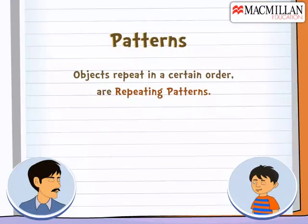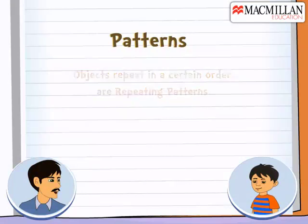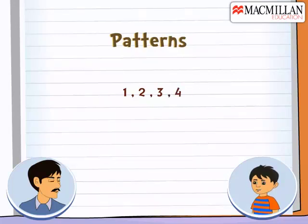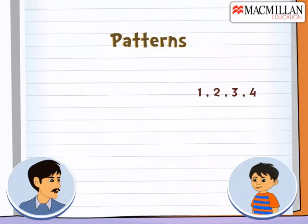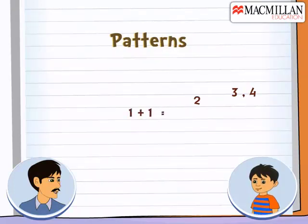Objects repeat in a certain order, are repeating patterns. Now, you count the numbers. One, two, three, four. Exactly. You know, you are actually adding one number to the previous number. Like, one plus one is two. Two plus one is three. Three plus one is four. And so on. So, this is called increasing pattern.